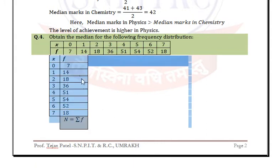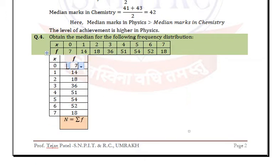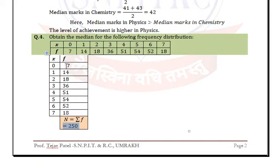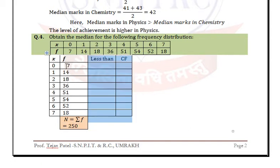Before that, add all the frequencies. Capital N means summation of f, which is 250. Now define the cumulative frequency in less than form.